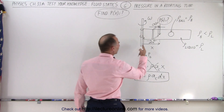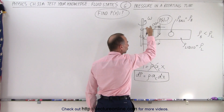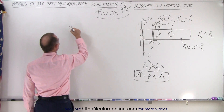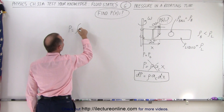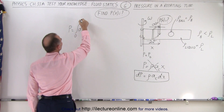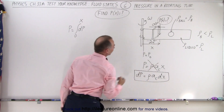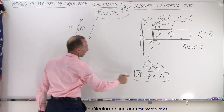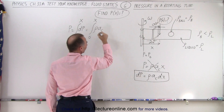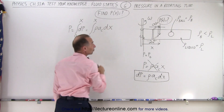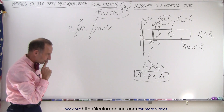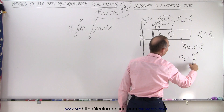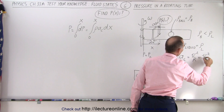Therefore, a small little change in the pressure equals the density times the centripetal acceleration at that location times a small little change in x. This is the proper way of writing it. To find the pressure at any point, we have to add up the pressure differences of all the little slices — we have to integrate. The pressure is equal to the summation of all the little dPs from zero to the point of interest, which is the integral from zero to x of the density times the centripetal acceleration times dx. The centripetal acceleration is equal to v² over r, and here r is x, so it is v² over x.